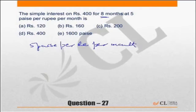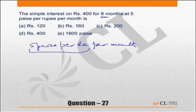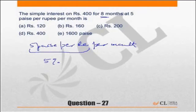Let us look at what we mean by this. 5 paise per 100 means that for every one rupee that you invest, you will get an interest of 5 paise, or for every 100 paise of investment you will get 5 paise. This is nothing but 5%. So 5% per month is the rate of interest.